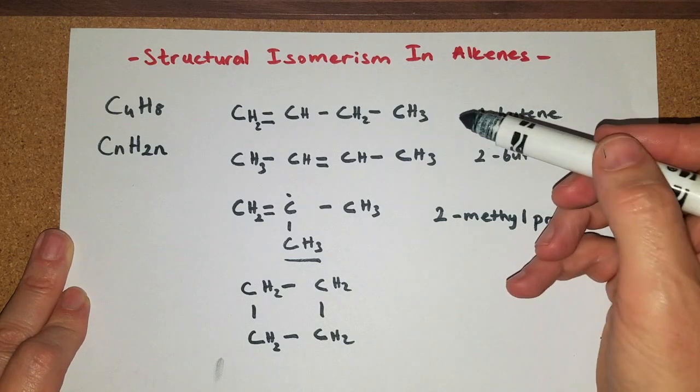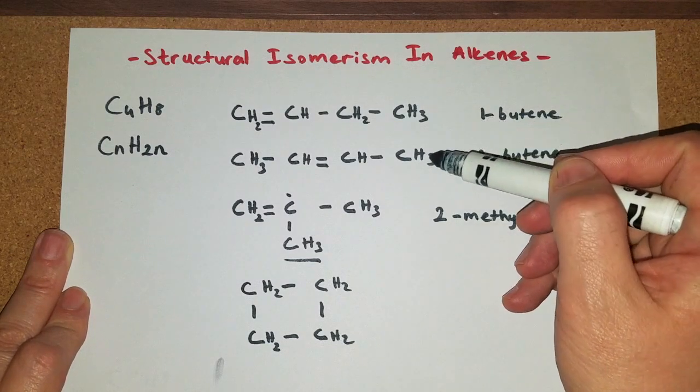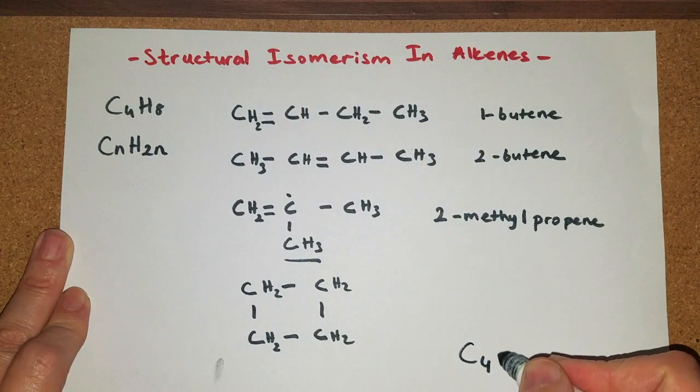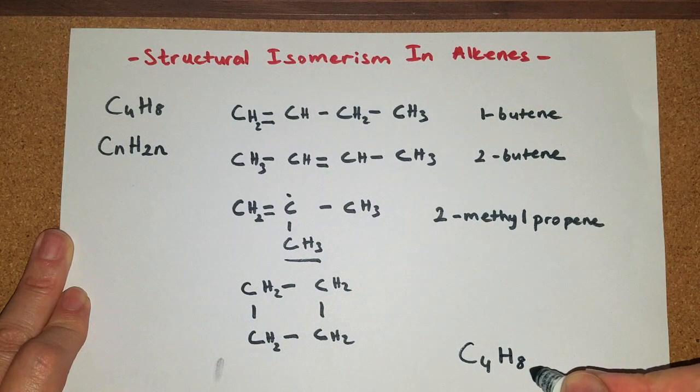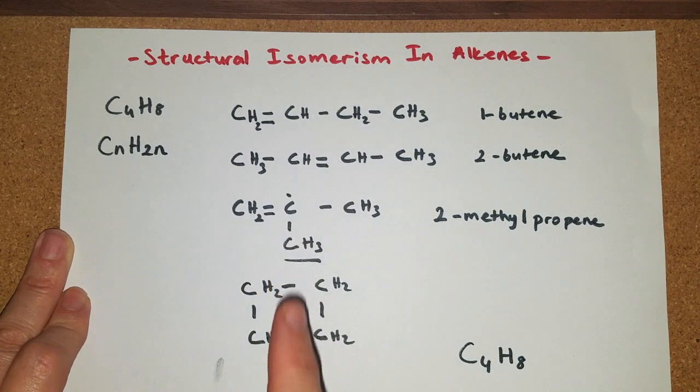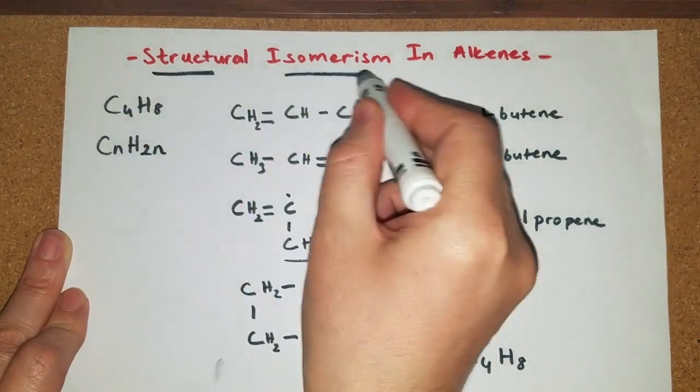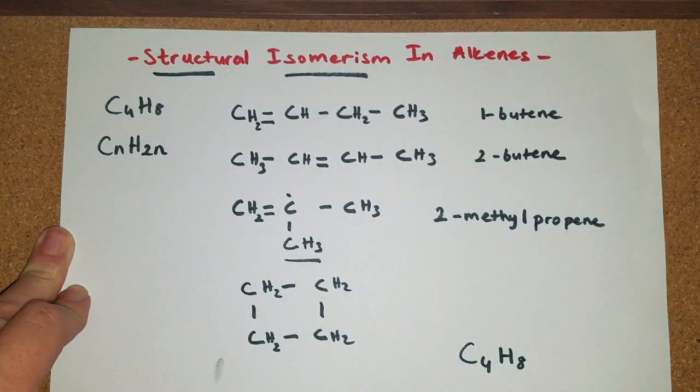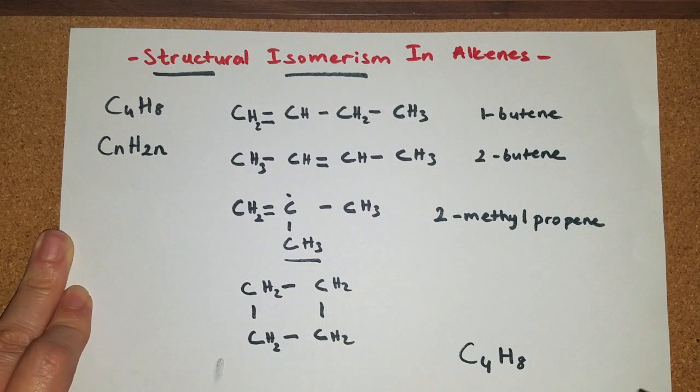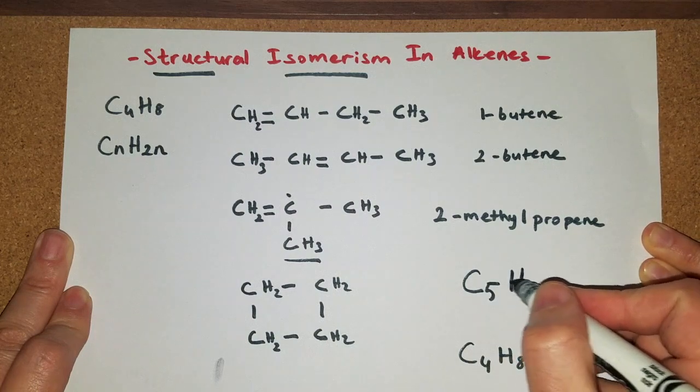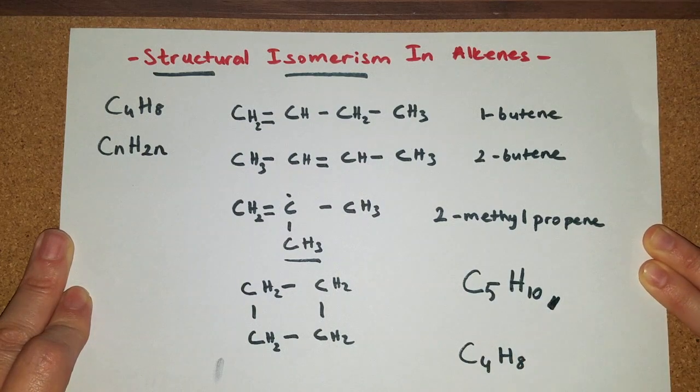If you count the number of carbons and hydrogens in all these four compounds, you're going to see that you do have four carbon atoms and eight hydrogen atoms. All these four compounds are structural isomers of one another. Now if you would like to practice you can try making some isomers of C5H10. Good luck.